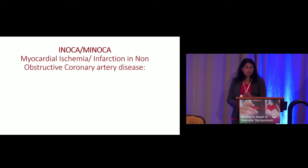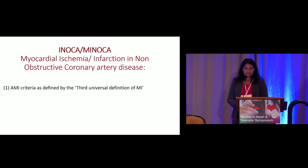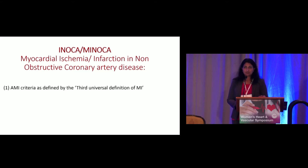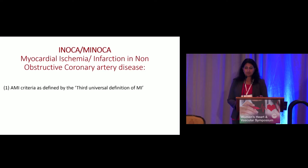One of the first things I want to talk about is how to diagnose myocardial ischemia or infarction in non-obstructive coronary artery disease. We look at three criteria. The first is whether the patient falls into acute MI criteria — the universal definition of MI: the patient presents with chest pain or symptoms similar to CAD, has EKG or echo changes, and a rise and fall in troponin of at least the 99th percentile of the lab normal. If the patient meets all these criteria, that confirms acute MI.